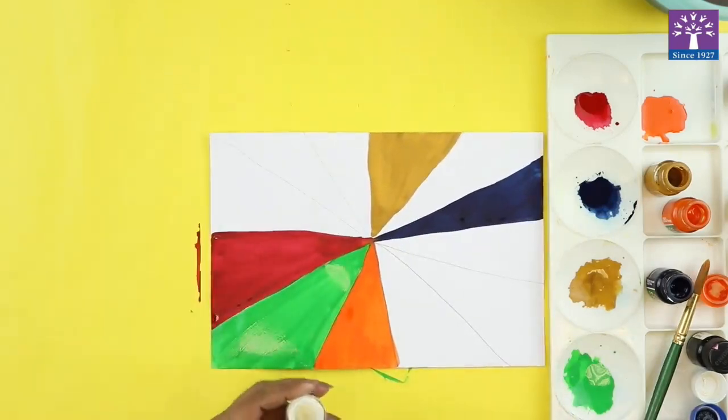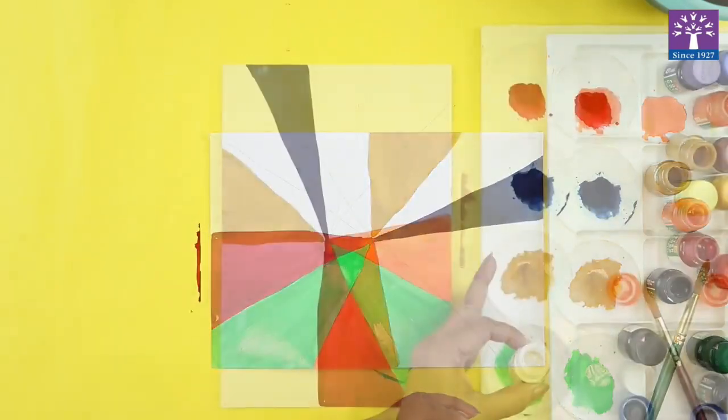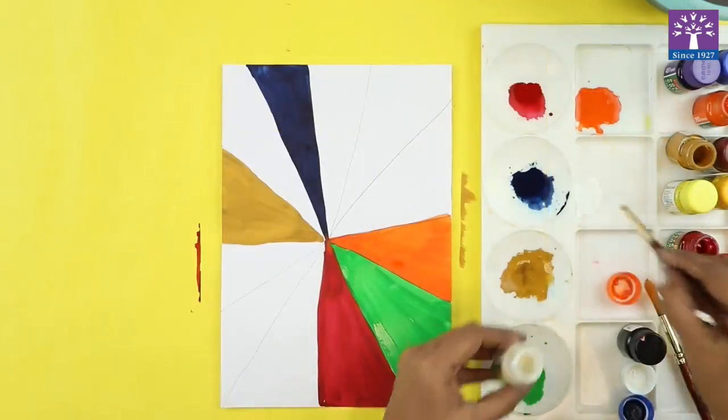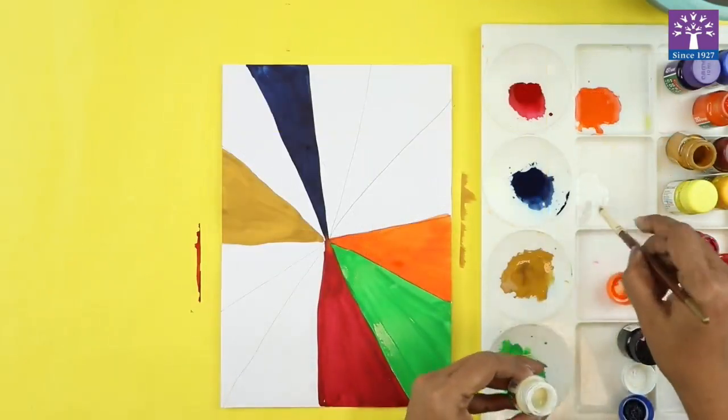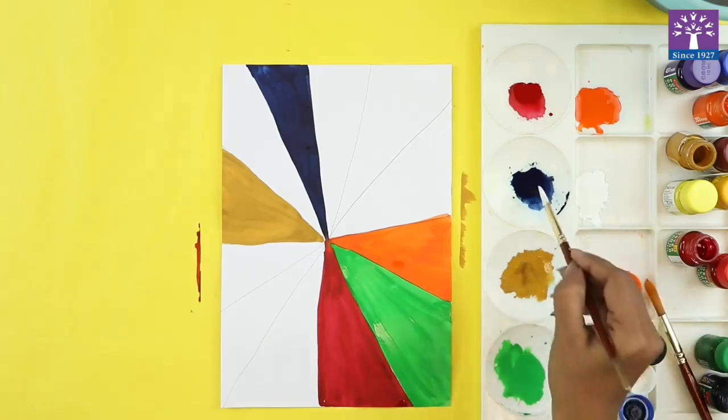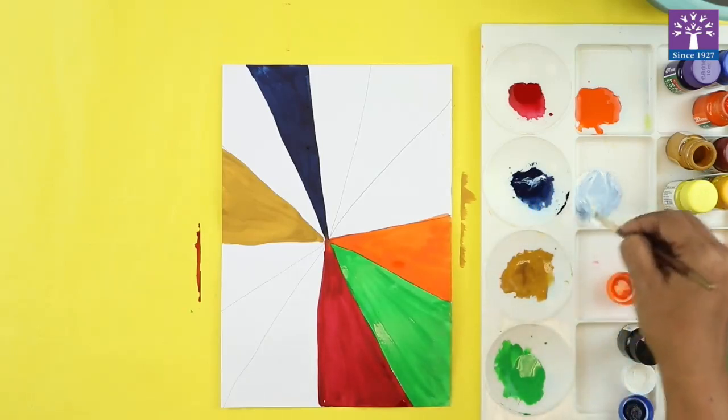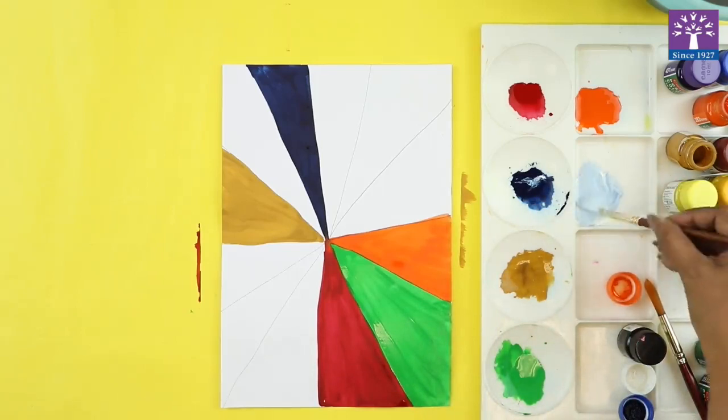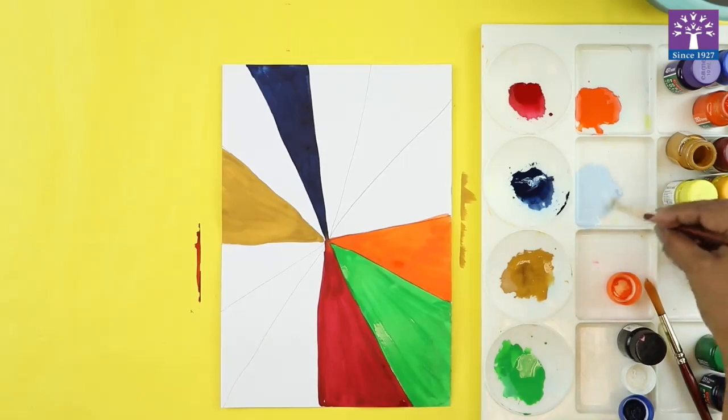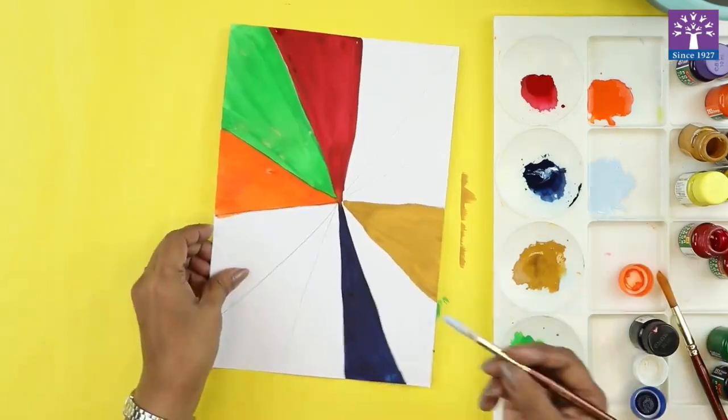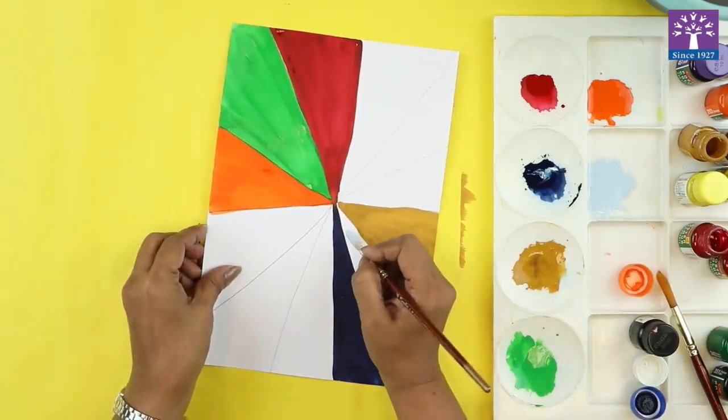Now what I'm going to do is I'm going to take a little bit of white color. I hope you are seeing the palette, I've taken the white paint, I'll pick up any one color. I'm taking this blue color and mixing it, so see I created the tint of this blue color. This is called as the tint. Now I'm going to paint in between this.